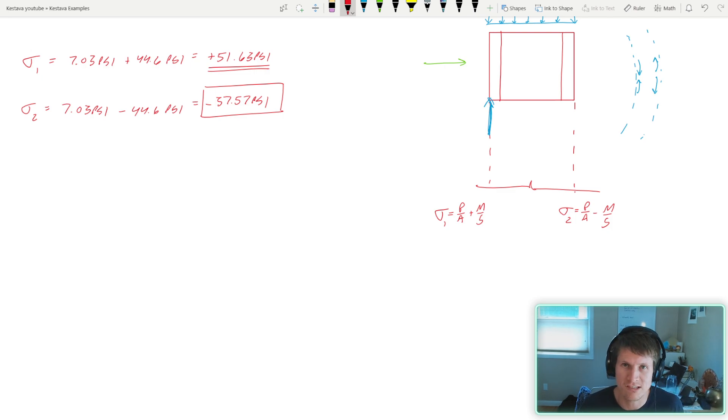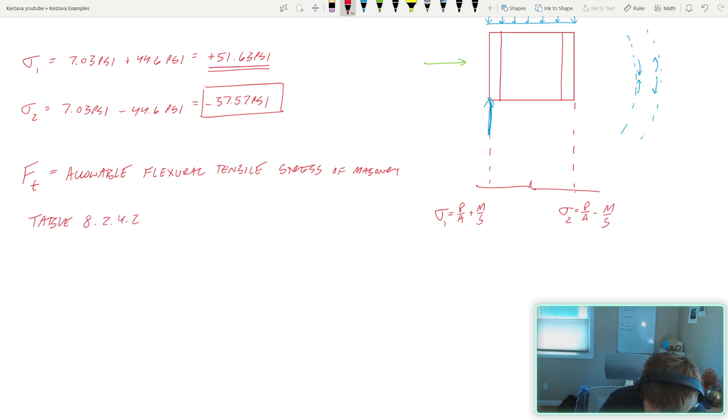Well, is the wall adequate as is? Let's find out quick. And I promise you, this won't take long. Well, in order to determine if we have enough tensile capacity of our mortar and of our wall, we need to determine F sub T, and this is for allowable design. So it's the allowable flexural tensile stress of masonry, and you can find this in the TMS in the, I believe it's in the ASD chapter, but I do know it's table 8.2.4.2.